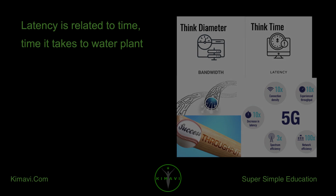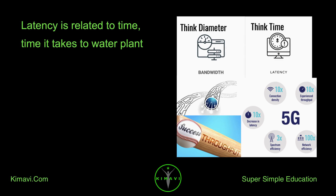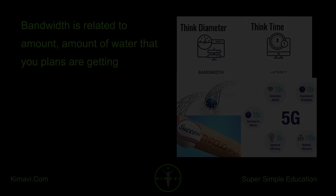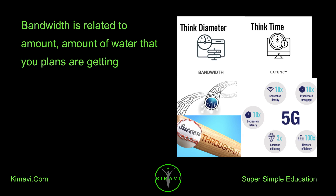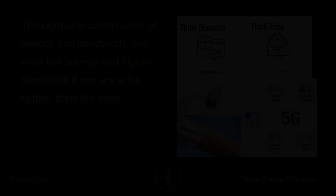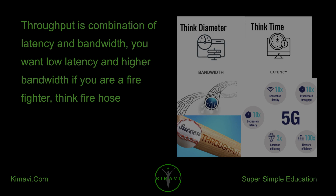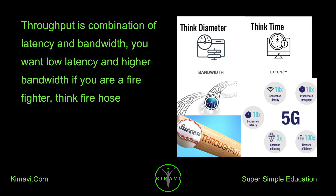Latency is related to time — the time it takes to water your plants. Bandwidth is related to amount — the amount of water that your plants are getting. Throughput is a combination of latency and bandwidth. You want low latency and higher bandwidth.